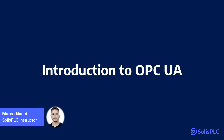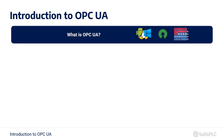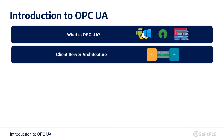In this course we will see many things about OPC UA. We will first learn what OPC UA is and what are the main features that distinguish OPC UA from any other communication system in the industrial automation industry. We will also learn in detail about the client-server architecture of OPC UA and the underlying mechanisms that OPC UA relies on.